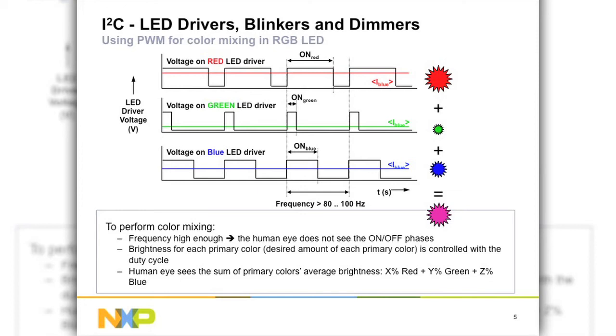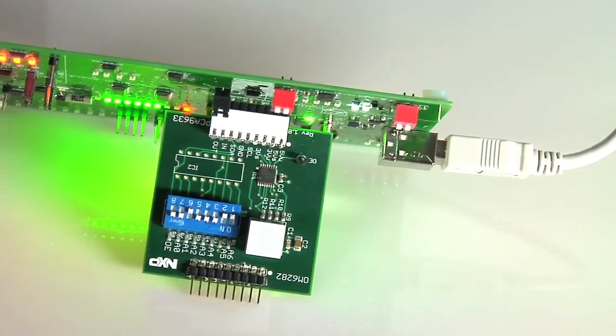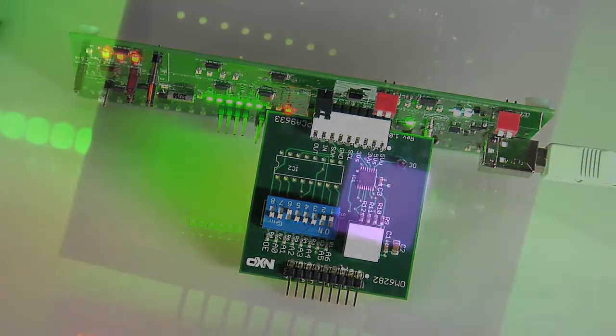The brightness of the LED output light is altered by changing the pulse width of the LED driver output. To perform color mixing, the LED output frequency must be greater than 80 Hz. The brightness of each primary color is controlled by the duty cycle of that primary color LED output. If the desired brightness is 100%, then the output is on all the time. If the desired brightness is 25%, then the output is turned on only for one quarter of the time and turned off for the remaining three quarters. The result is that the human eye will see the sum of the primary colors' average brightness.